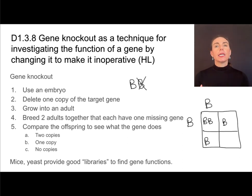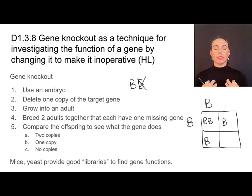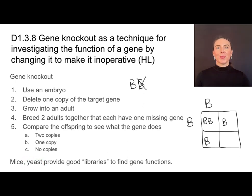Mice make really good experimental animals for gene knockout. They have a very short generation time, plus they share many of the same physical characteristics as humans. So do yeast — a significant portion of our genome is shared with yeast, and they also have a very short generation time. So this is gene knockout.